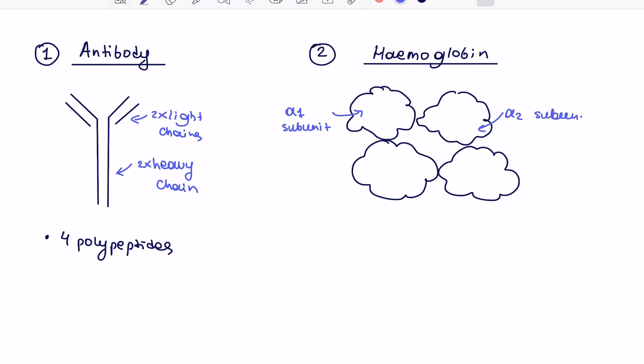There is alpha one subunit, alpha two subunit, beta one subunit and beta two subunit. Please be careful and don't mix it with alpha helix and beta pleated sheets. There are two different things. These are actually four separate subunits.